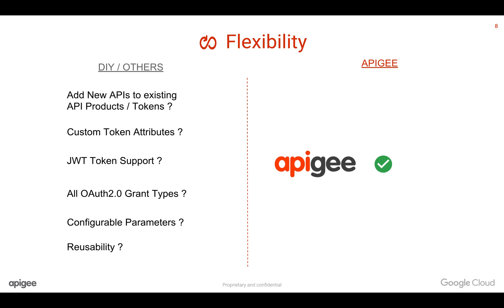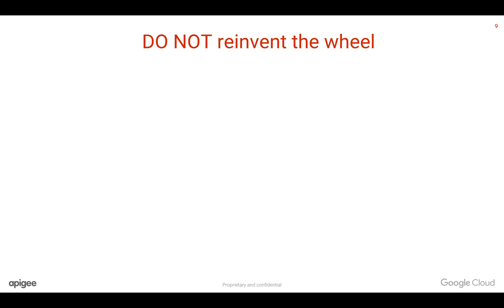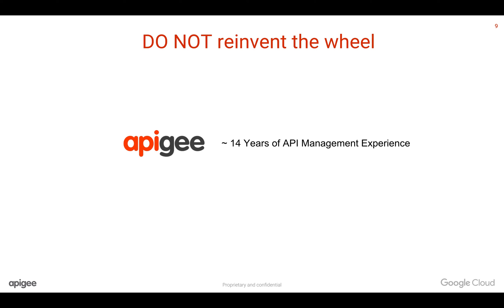Apigee provides all these things out-of-the-box so that you can move faster. And the key message is: do not reinvent the wheel. Apigee has been in the API management space for the last 14 years, and we've built all this technology that scales to billions of tokens and billions of API transactions. Instead of reinventing the wheel, you can focus on your business — just build the APIs and secure them through Apigee Edge API management platform.